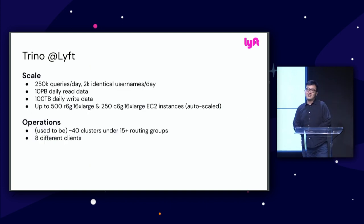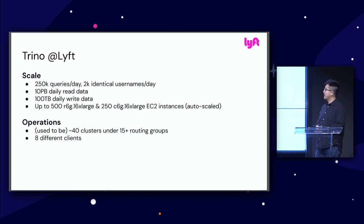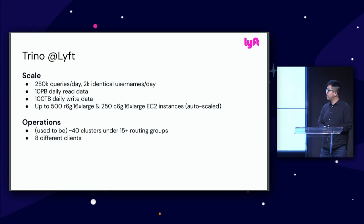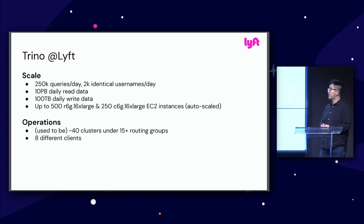Some numbers to give an overview: we're running on average 250,000 queries a day, with 2,000 unique user names. We have 10 petabytes of daily data read and 100 terabytes of daily data write with Trino. We're currently using about 500 R6G instances with another 250 C6G for compute-heavy interactive queries.